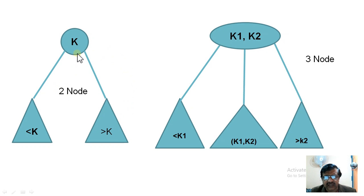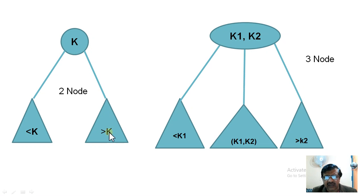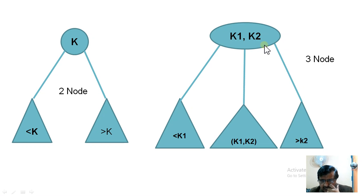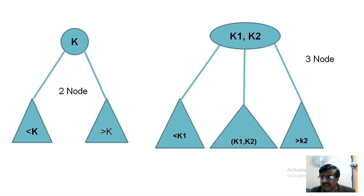In a 2-node component of the tree, there is only one key at the root level. The left child has a key with a value less than the root key, and the right child has a key greater than the root key. In a 3-node of a 2-3 tree, there are two keys at a node. This is the salient difference between the conventional binary search tree and the 2-3 tree.